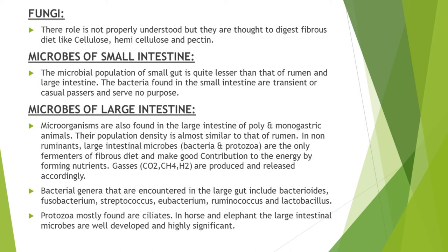Microorganisms are not only found in the rumen but also in the small intestine and large intestine. The microbial population of the small intestine is lesser than that of the rumen and large intestine, and most bacteria found in the small intestine are casual passers serving no purpose. In non-ruminants, microbes present in the large intestine cause fermentation of fibrous diet, making a good contribution to energy by forming nutrients through fermentation, and producing gases like carbon dioxide, methane and hydrogen.